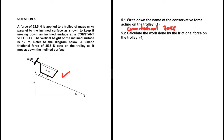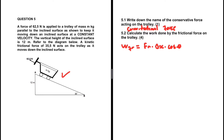The work done by the frictional force equals the magnitude of the frictional force multiplied by the displacement multiplied by cos θ. The frictional force is 35.5 newtons. We don't have delta x directly — we're given the angle of 30 degrees and the height. Using the angle and the height we can find delta x. Our theta for the cos term is 180 degrees, since the displacement is down the incline and the frictional force acts up the incline.